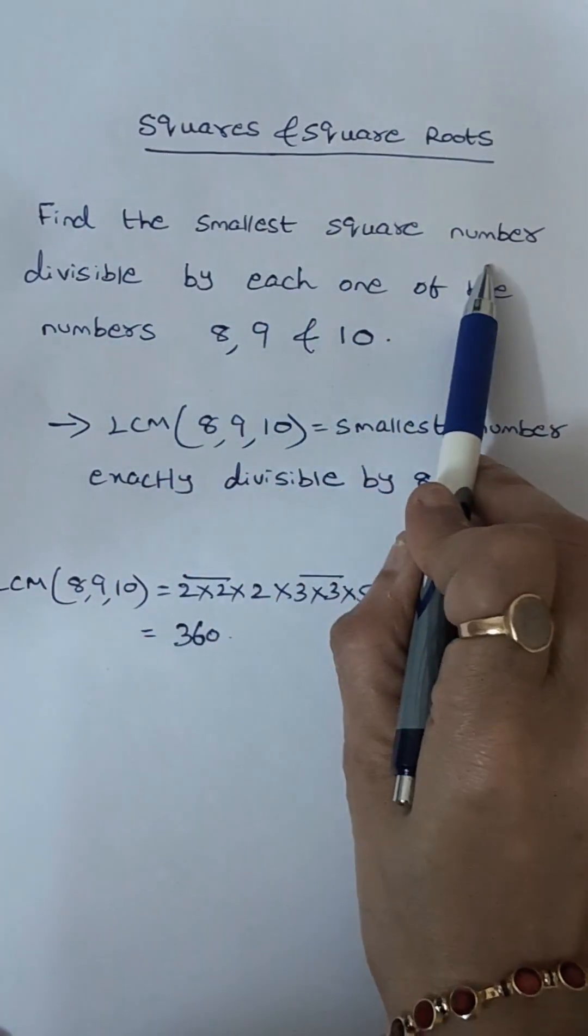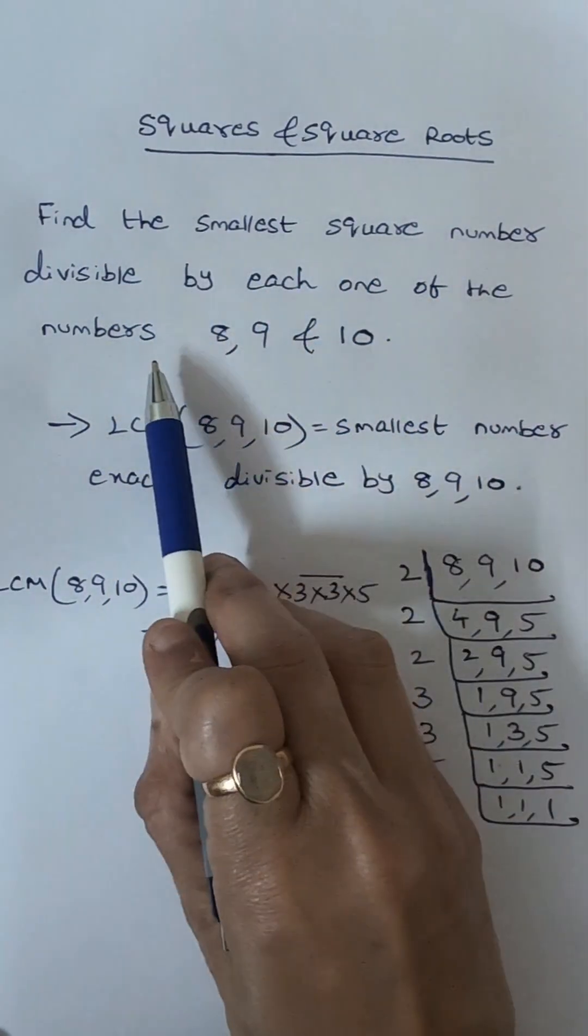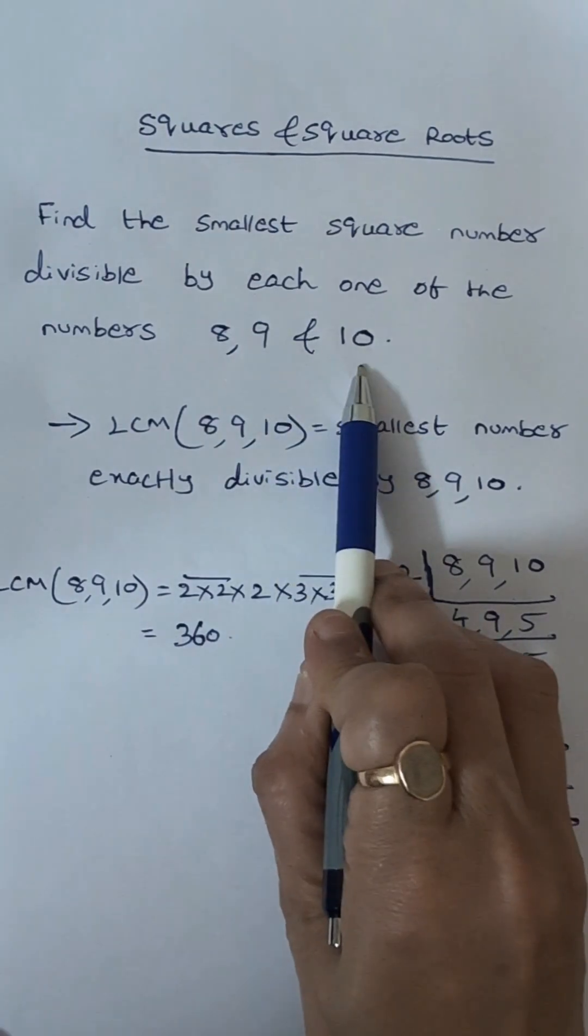We have to find the smallest square number divisible by each one of the numbers 8, 9 and 10.